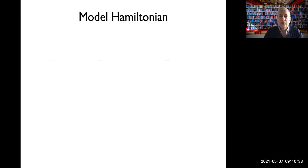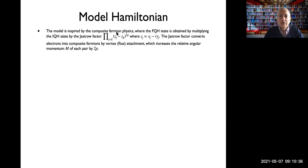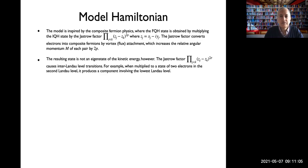The model Hamiltonian is inspired by composite fermion physics, where fractional quantum Hall states are obtained from integer quantum Hall states by multiplying by a Jastrow factor. The Jastrow factor converts electrons into composite fermions by vortex attachment and increases the relative angular momentum m of each pair by 2p. The resulting state is not an eigenstate of the kinetic energy, however, because the Jastrow factor causes inter-Landau level transitions.